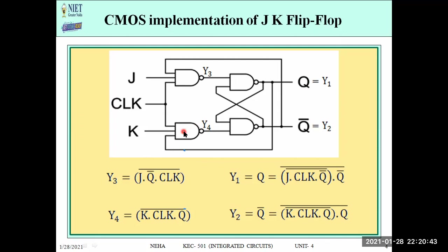Now let us calculate y4. y4 has inputs: clock, K, and a third input coming from the feedback, which is Q. So y4 = NAND(K, clock, Q), which equals the complement of (K · clock · Q). Since this is a NAND gate, the output is complemented. So y4 = overline{K · clock · Q}.